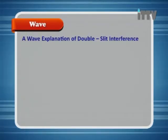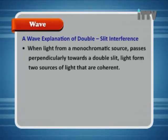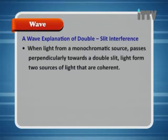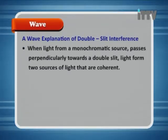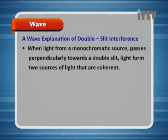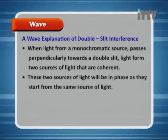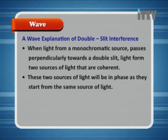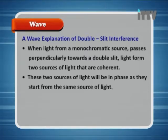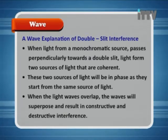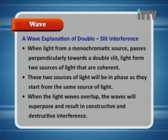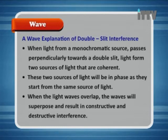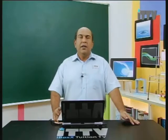Wave Explanation for Double Slit Interference. When light from a monochromatic source passes perpendicularly towards a double slit, light forms two sources that are coherent. These two sources of light will be in phase as they start from the same source of light. When the light waves overlap, the waves will superpose and result in constructive and destructive interference. So what happens is we start from a single light source, and then we allow this light source to hit a double slit.